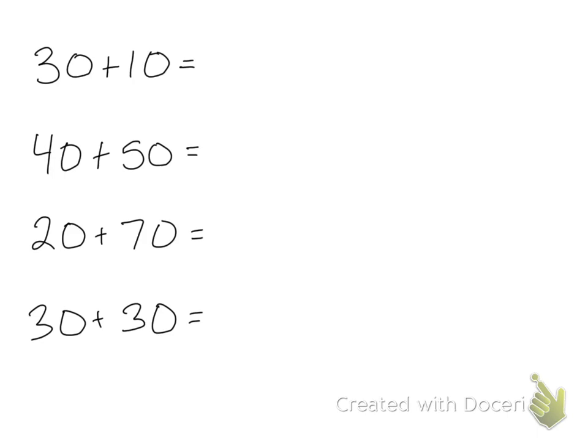So let's find these answers really quick. So 30 plus 10 is 40 because 3 plus 1 is 4 and then we add a 0 at the end because we're adding multiples of 10. 40 plus 50 is 90, 20 plus 70 is 90, and 30 plus 30 is 60.